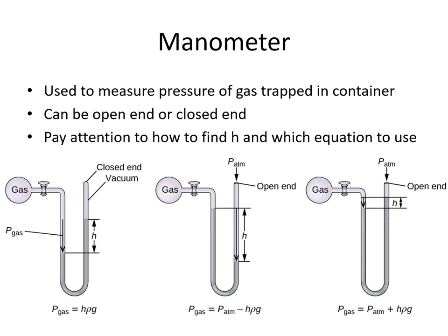If we want to measure the pressure of gas trapped in a container, we use a manometer. There are a few types: closed end or open end, and the equations are similar to the barometer with some modifications. If there's a closed end and a vacuum, the equation is the same: pressure equals hdg. If there's an open end, we add the atmospheric pressure and either subtract or add hdg depending on whether the liquid level is lower or higher on the side open to the atmosphere.